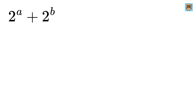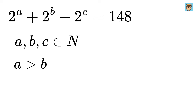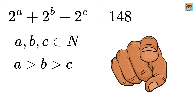2 to the power of A plus 2 to the power of B plus 2 to the power of C equals 148. Our goal is to find the values of A, B, and C, where each of them is a natural number, A is greater than B, and both are greater than C. Can you solve it?